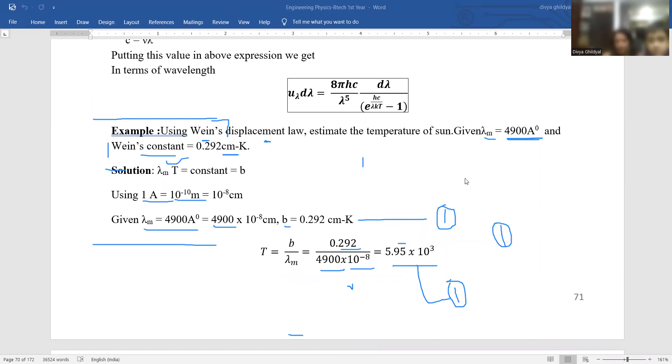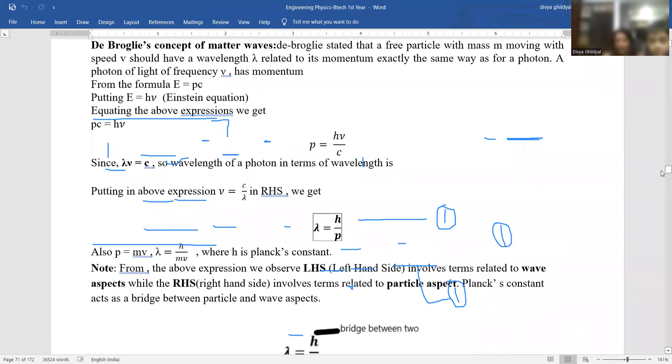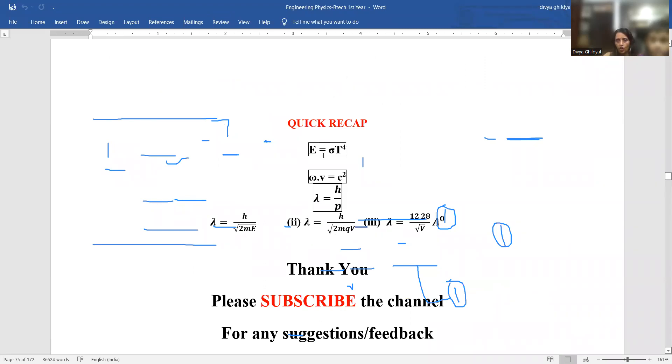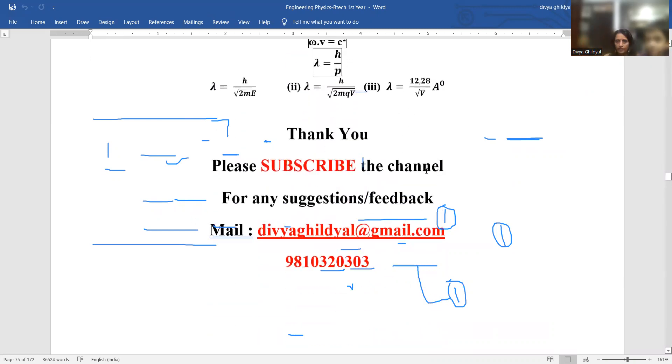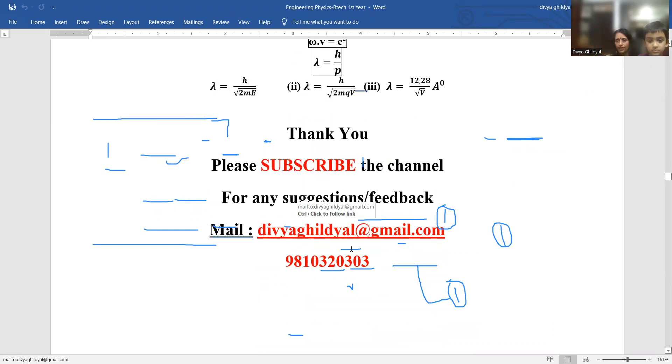Let me quickly revise what I taught you today. I told you about Stefan's law E = σT^4, that light has dual character, and about Planck's radiation law and Wien's law. Thank you. Please subscribe to my channel. For any suggestions or feedback, please mail me at divyagildial@gmail.com or my number 9810-320-303. Your suggestions are always welcome. Thank you.